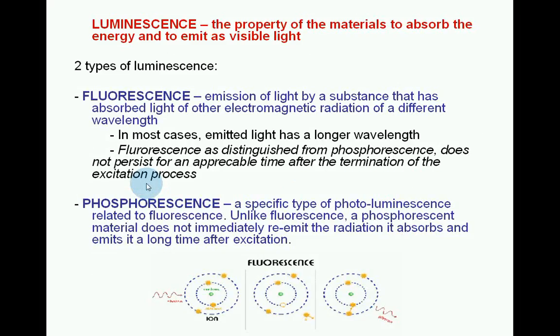Luminescence is the property of a material to absorb energy and emit it as visible light. There are two types of luminescence. The first is fluorescence, which is the emission of light by a substance that has absorbed light or other electromagnetic radiation of a different wavelength. In most cases, the emitted light has a longer wavelength. Fluorescence, as distinguished from phosphorescence, does not persist for an appreciable time after termination of the excitation process. Phosphorescence is a specific type of photoluminescence related to fluorescence; unlike fluorescence, a phosphorescent material does not immediately re-emit the radiation it absorbs but emits it a long time after excitation.